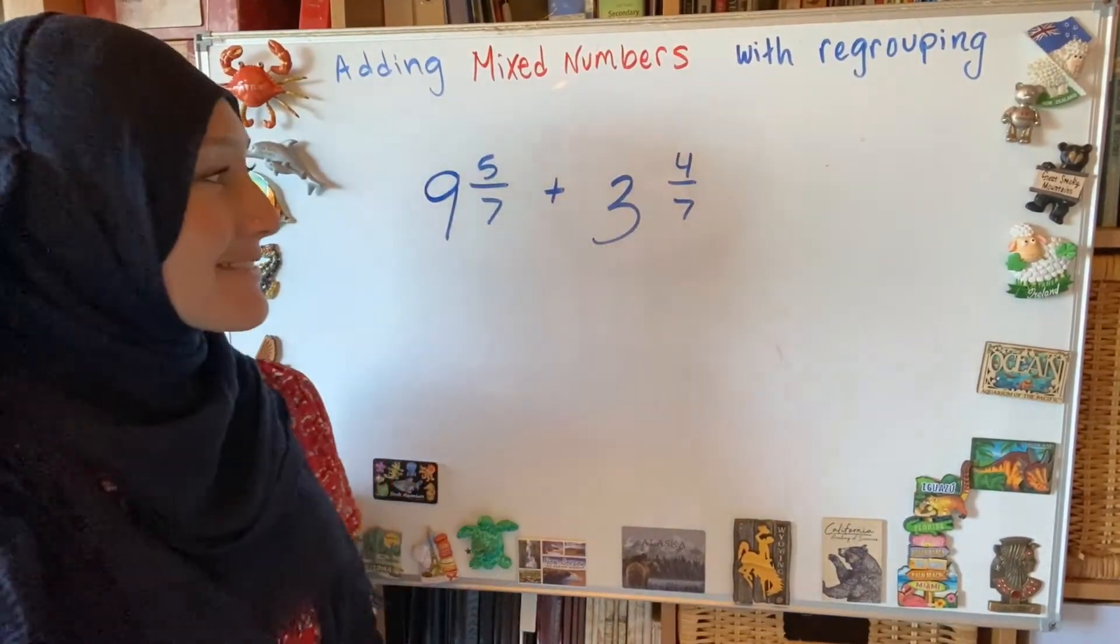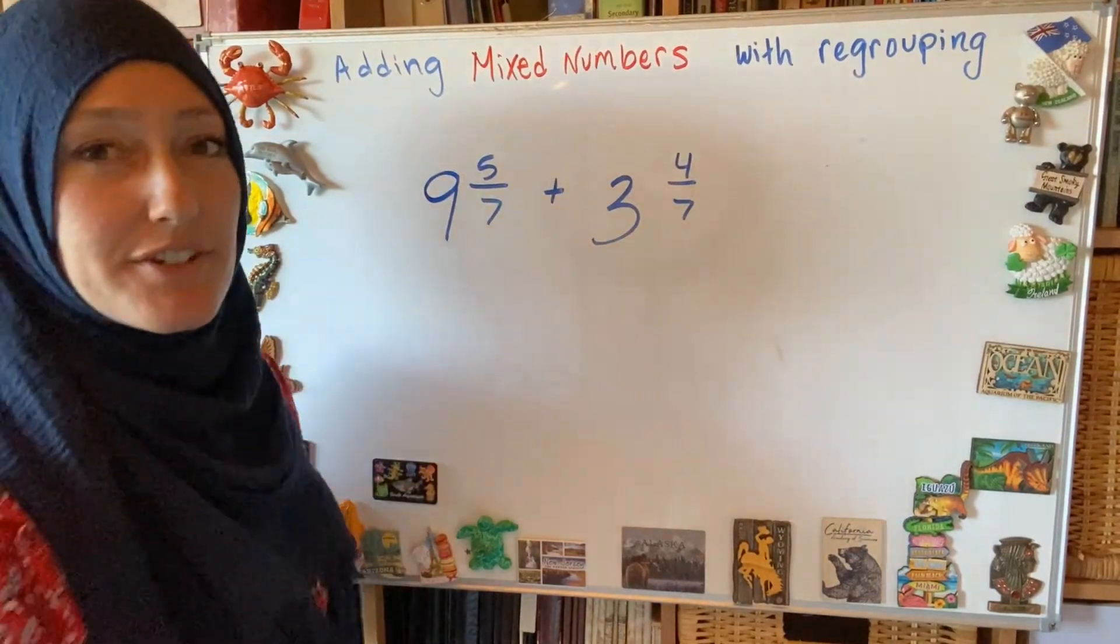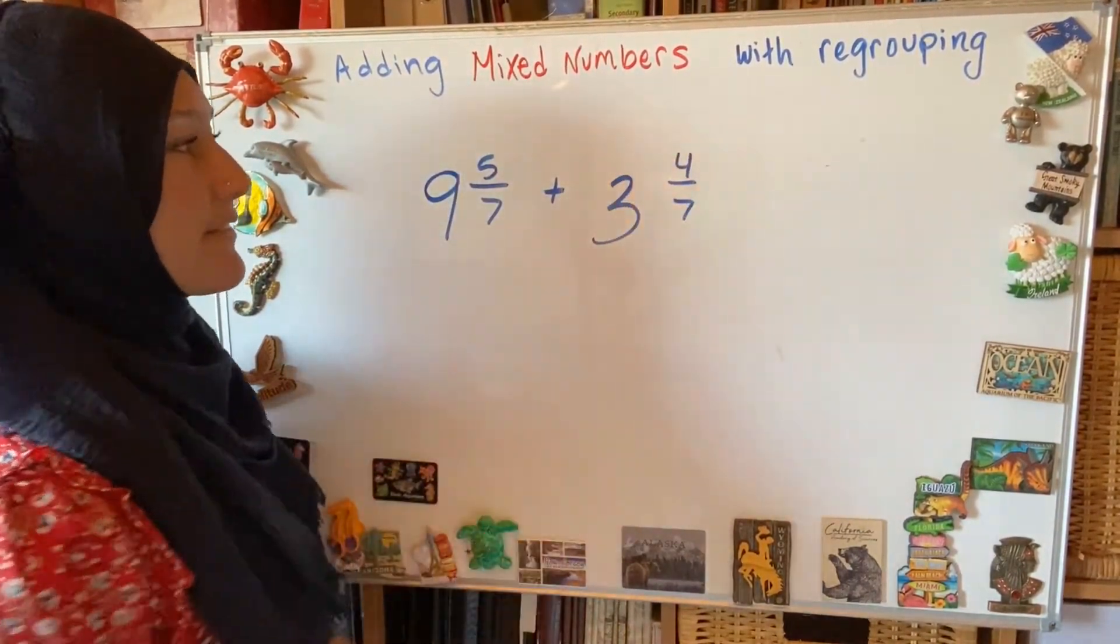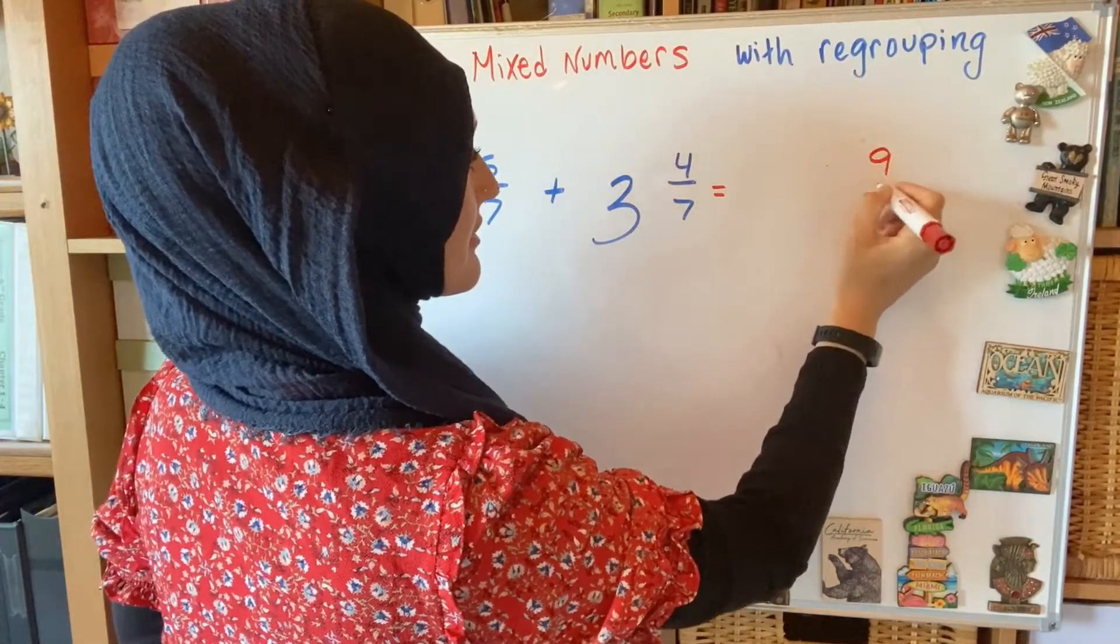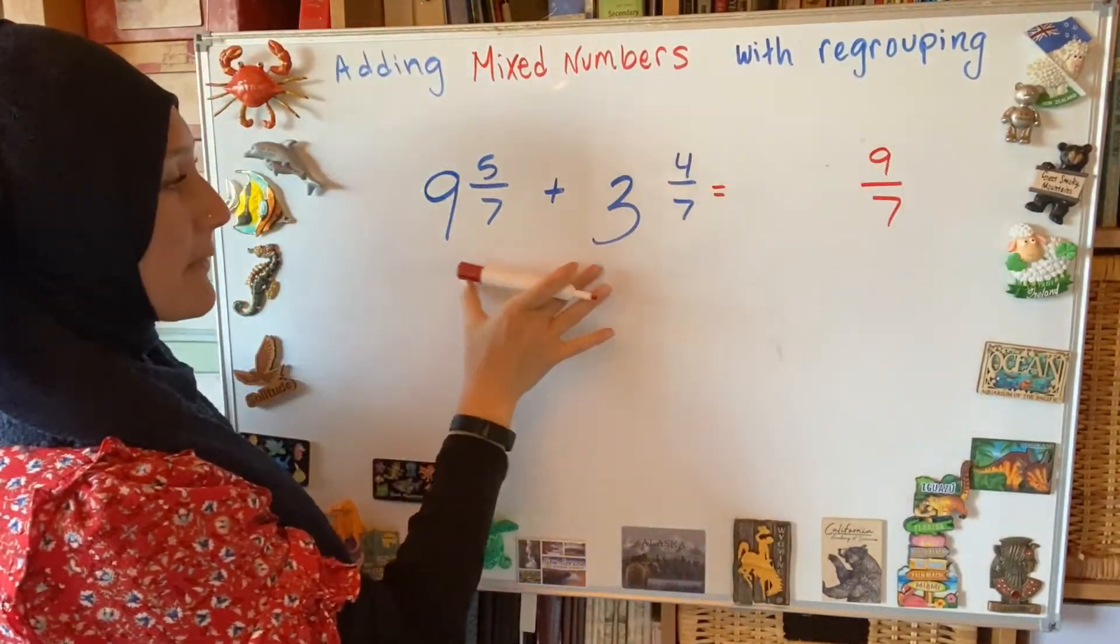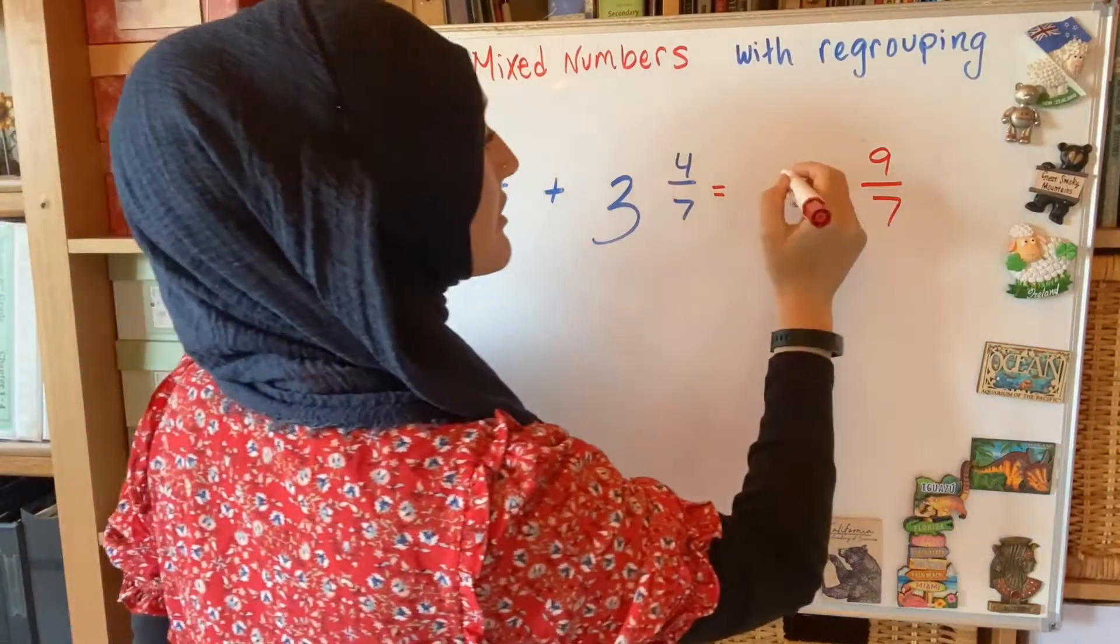Write it down. I look at my fractions first. I am adding 5 sevenths and 4 sevenths. So that is going to be 9 sevenths. I add my whole amount. 9 plus 3 is 12.